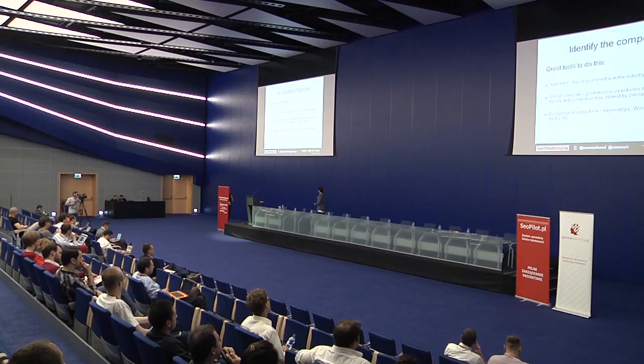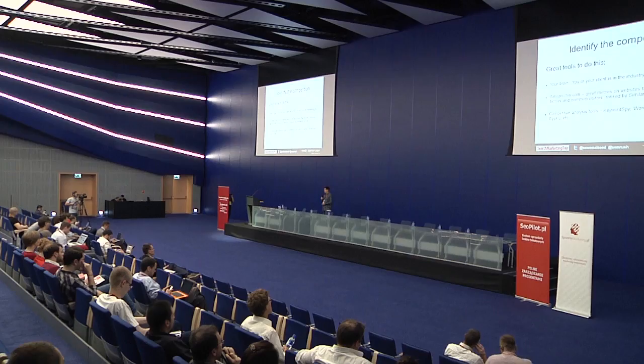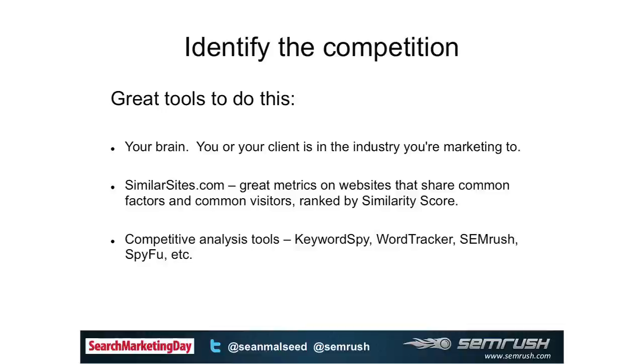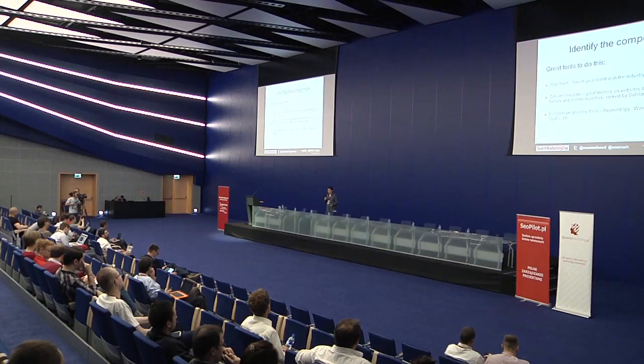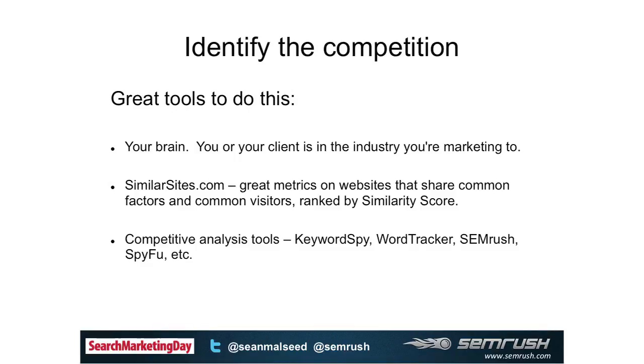The first tool is the one everybody uses automatically - use your brain. Obviously you'll have some insight before you start typing things into Google Keyword Tool. But then there are some other tools, because your brain isn't going to find everything - software will. The first thing, and actually my favorite new thing I'm going to talk about, is Similar Sites. Has anyone used Similar Sites? There's actually a Polish version of it. I like it a lot, so I'm going to talk about that a little bit, and then there are some other tools like Keywords by WordTracker, our own tool SEMrush, and so on.